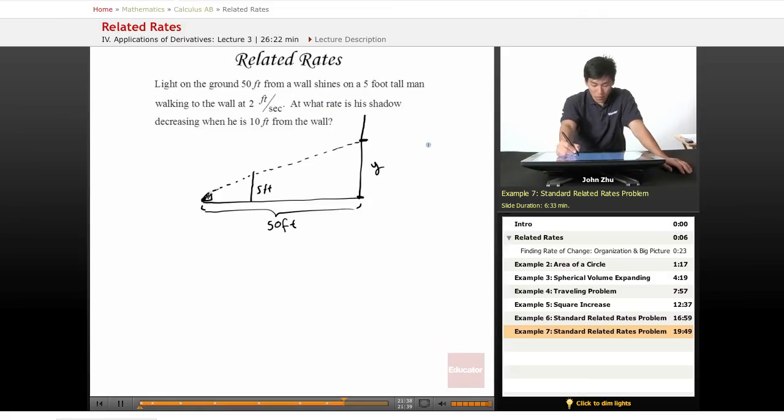Let's denote this distance x, and this distance 50 minus x. We see that there's two similar triangles. How do all these variables relate? If he's walking to the wall at two feet per second, we can call this x, we can call that dx/dt.